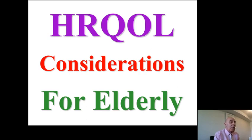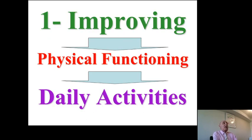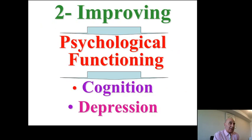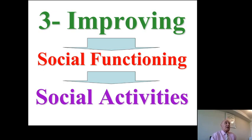The health-related quality of life for the elderly requires consideration of several factors: first, improving physical functioning, which will improve daily activities; second, improving psychological function to improve cognition and manage depression; and third, improving social functioning, which is very important for various social activities.